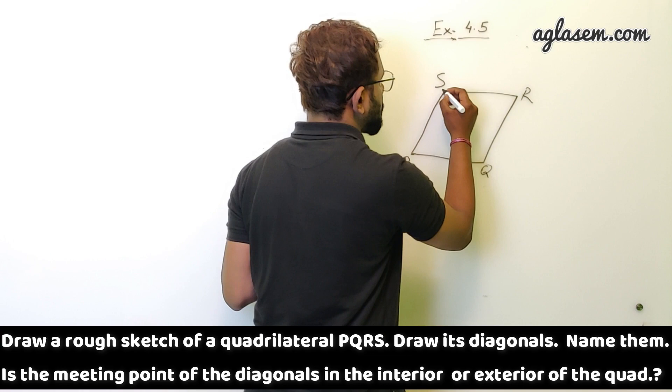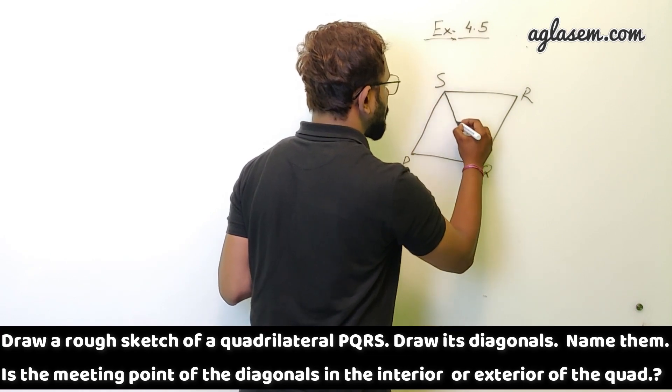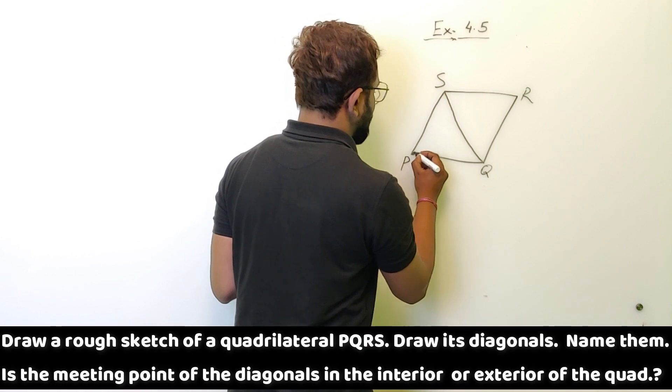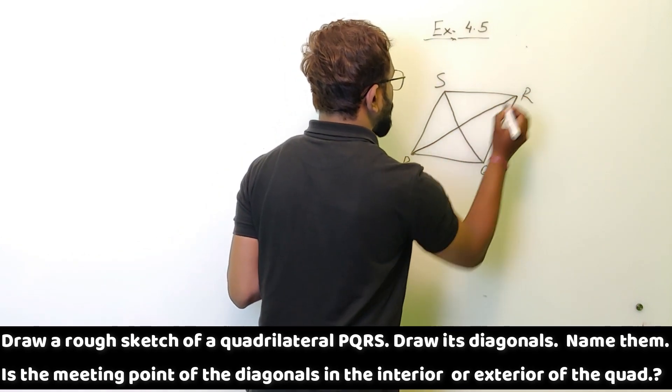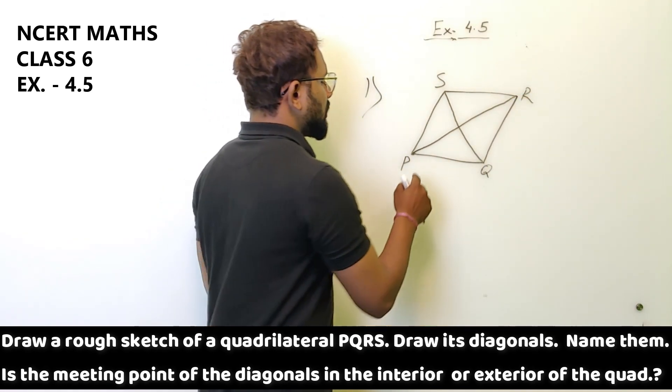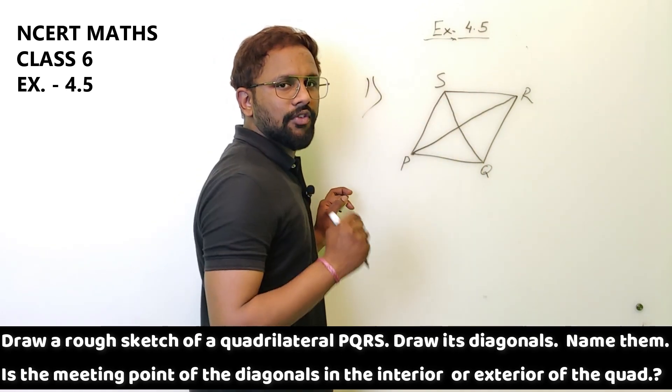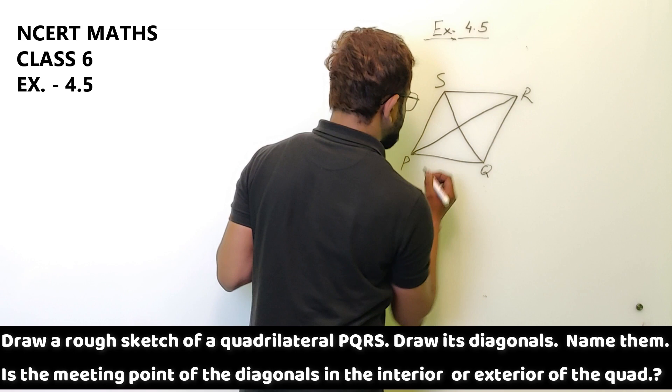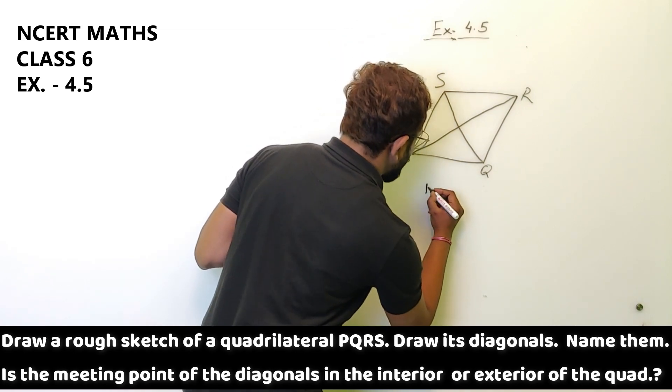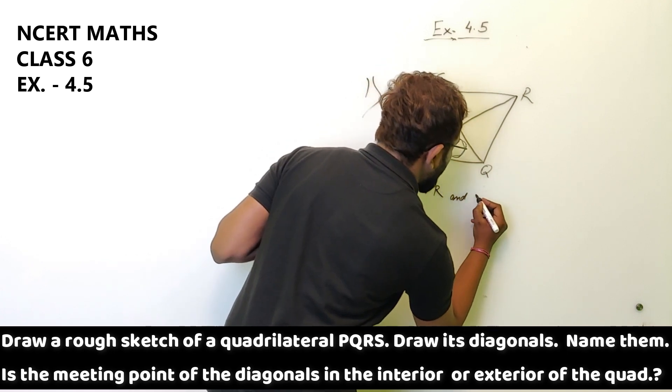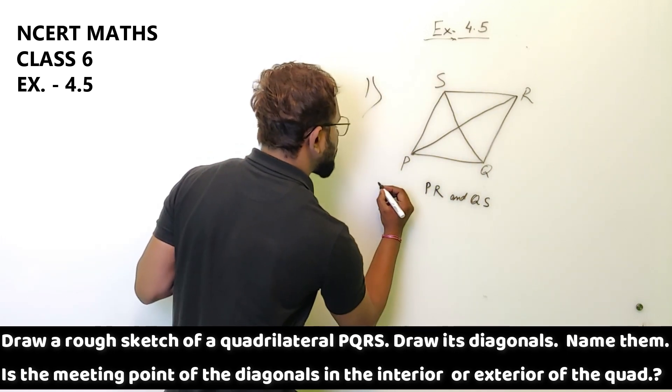Now diagonals are from this point to this. This is the diagonal of this quadrilateral. The other diagonal is this. So basically, diagonals are the line segments whose endpoints are the opposite sides of a quadrilateral. The names of the diagonals are PR and QS. So these are the diagonals.